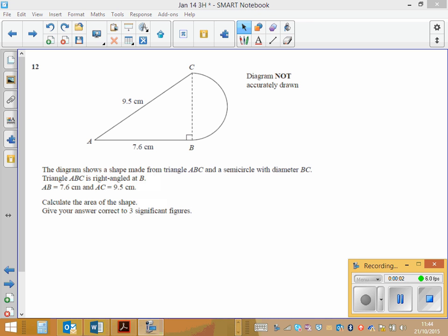This question asks us to find the area of a shape which is made of a right angle triangle and a semicircle. So let's look at the right angle triangle first.